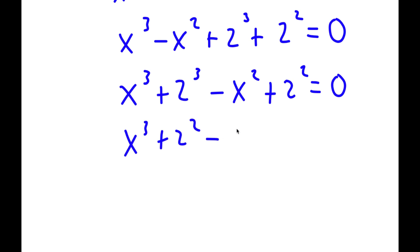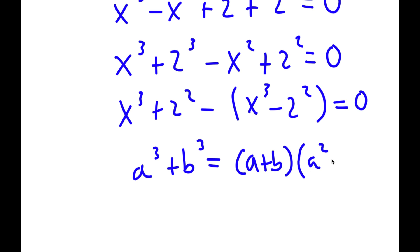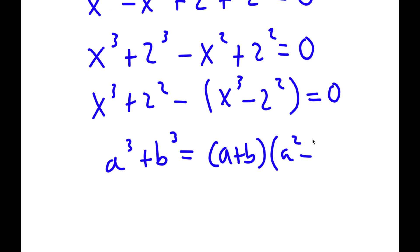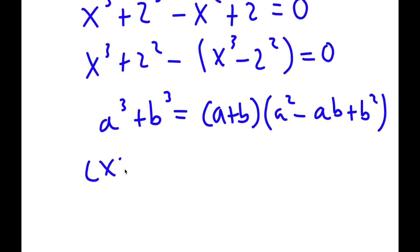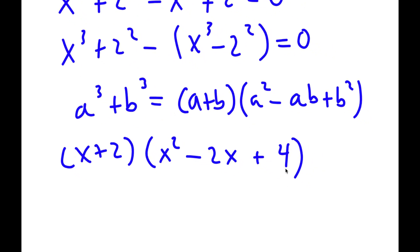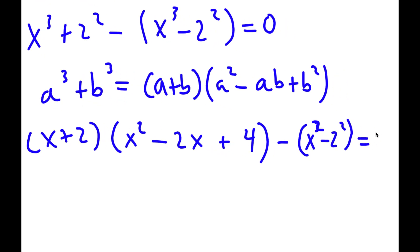Factoring out negative 1 gives me negative times x squared minus 2 squared. Now using the sum of cubes formula — a to the power of 3 plus b to the power of 3 equals a plus b times a squared minus ab plus b squared — x cubed plus 2 cubed equals x plus 2 times x squared minus 2x plus 4. Combined with the negative of x squared minus 2 squared, all equal to 0.